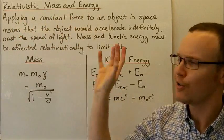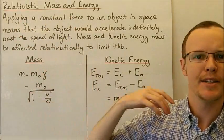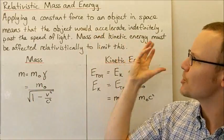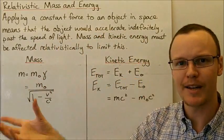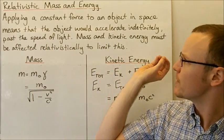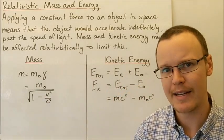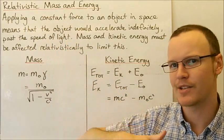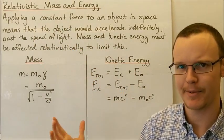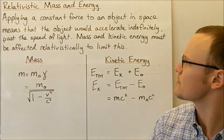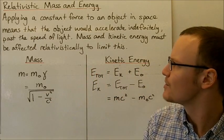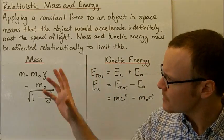If we apply a constant force to an object in space, there's no friction to stop it, slow it down, or oppose its motion. That means if we were to apply this constant force according to Newton's second law, we would accelerate the object indefinitely, past massive velocities, past even the speed of light. Clearly this can't be the case — we can't go faster than the speed of light. So mass and kinetic energy must be affected relativistically to limit it.